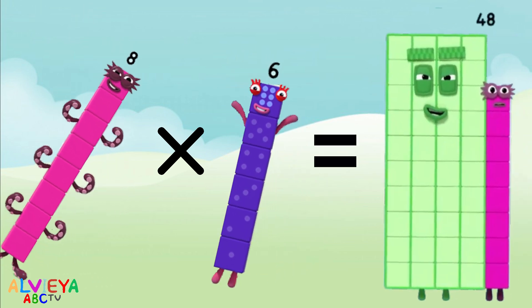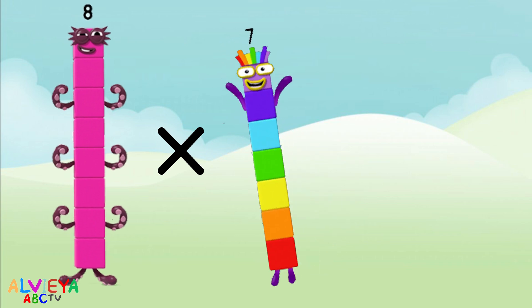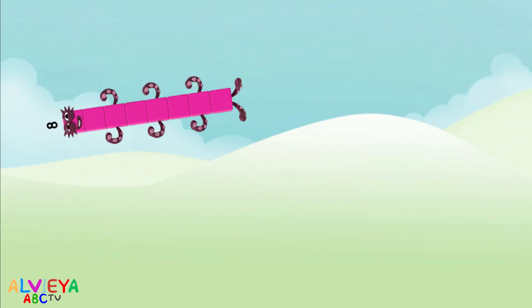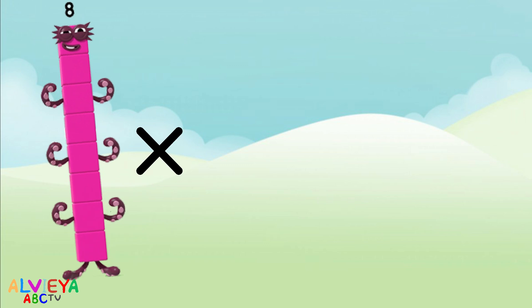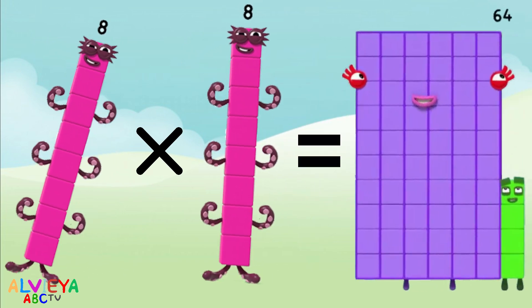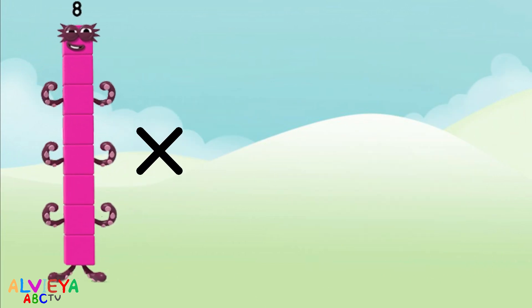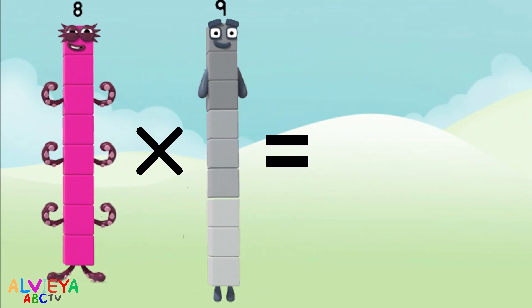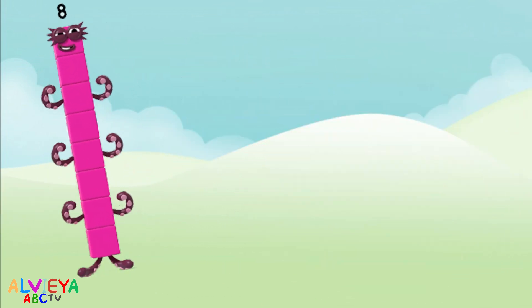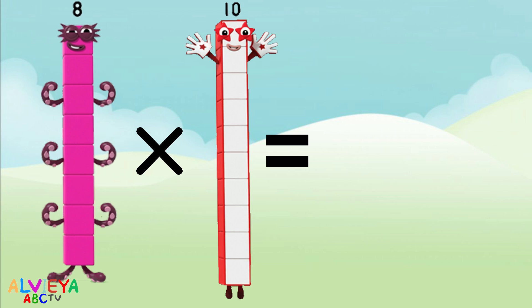Eight times seven equals fifty-six. Eight times eight equals sixty-four. Eight times nine equals seventy-two. Eight times ten equals eighty.